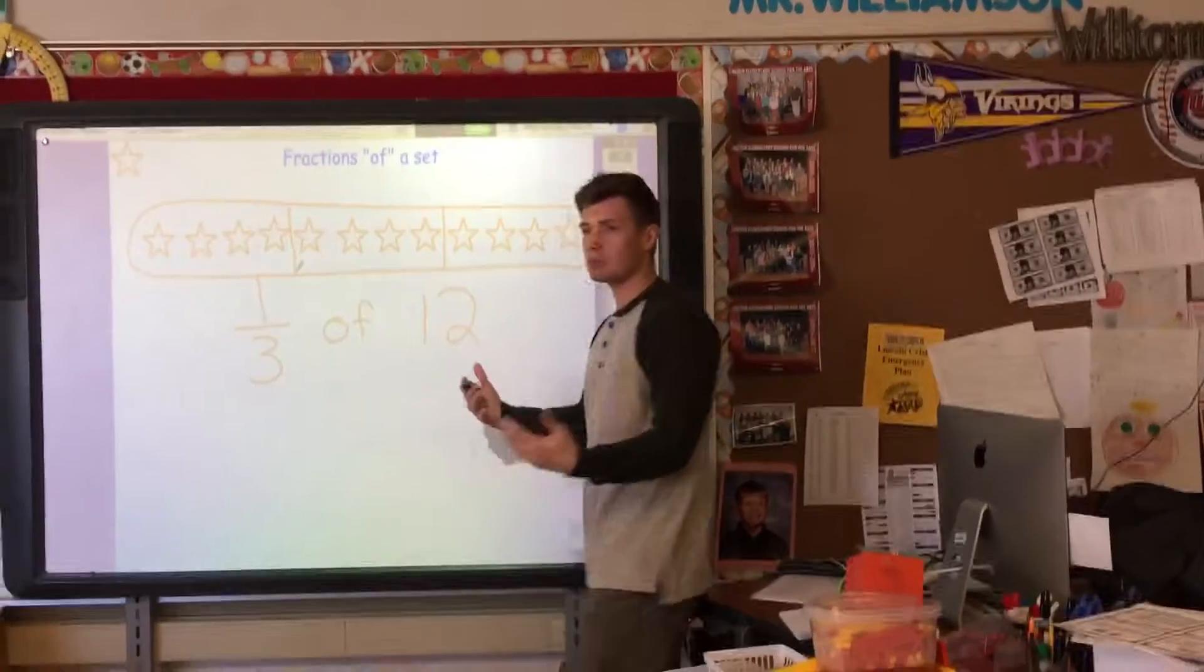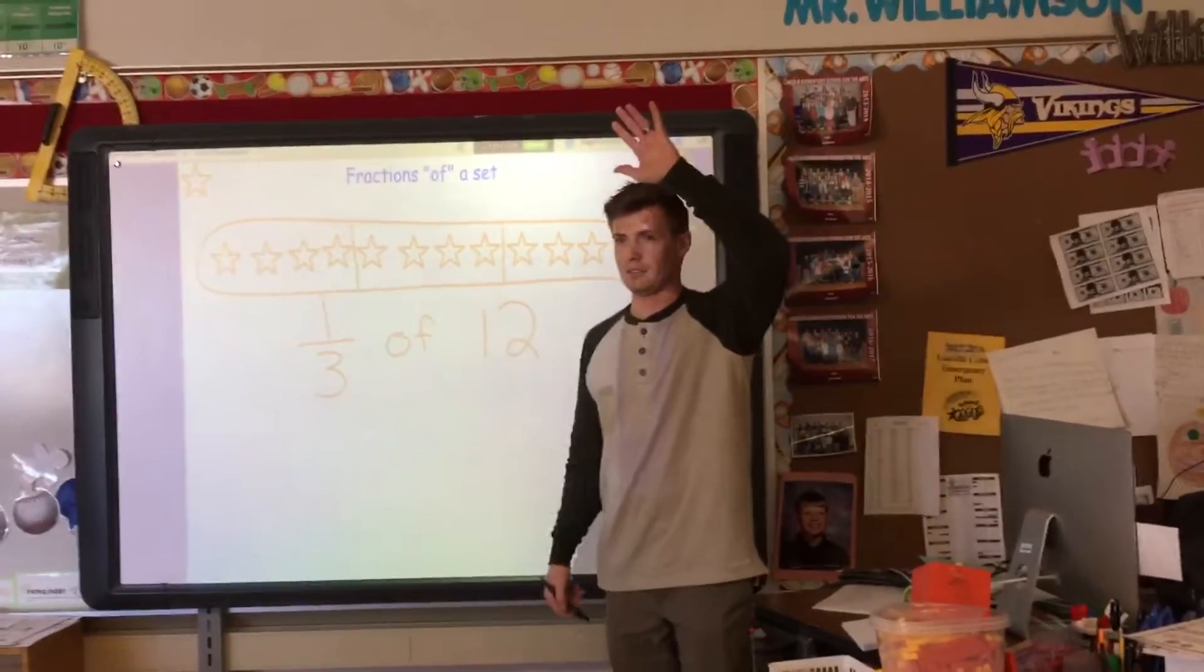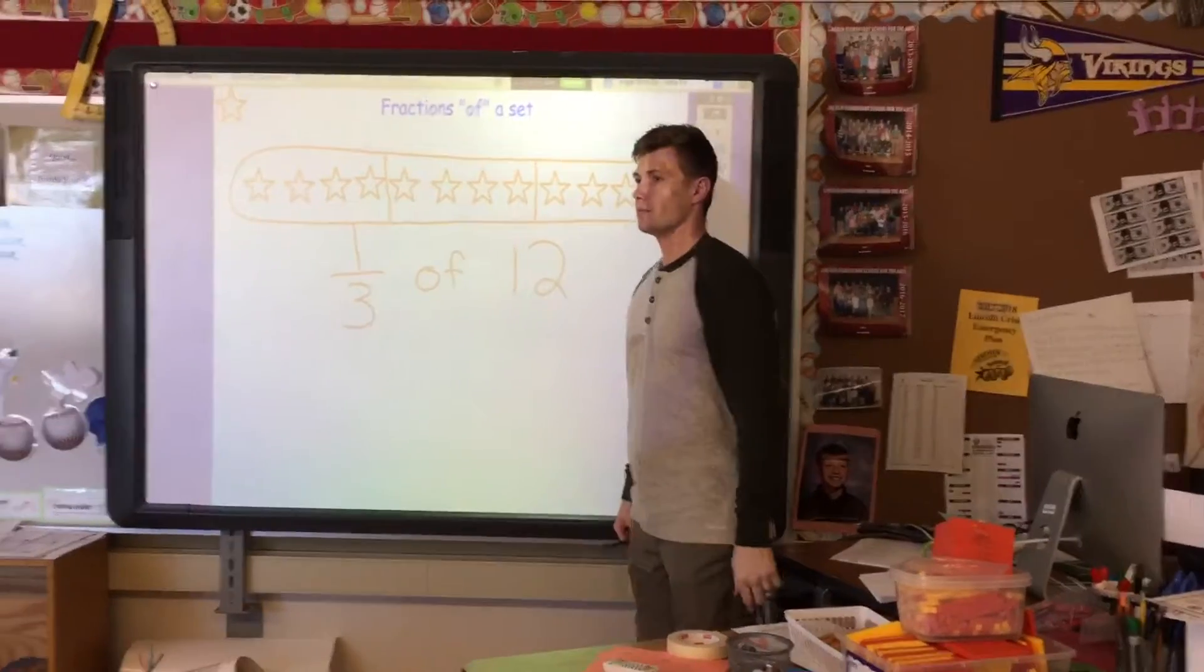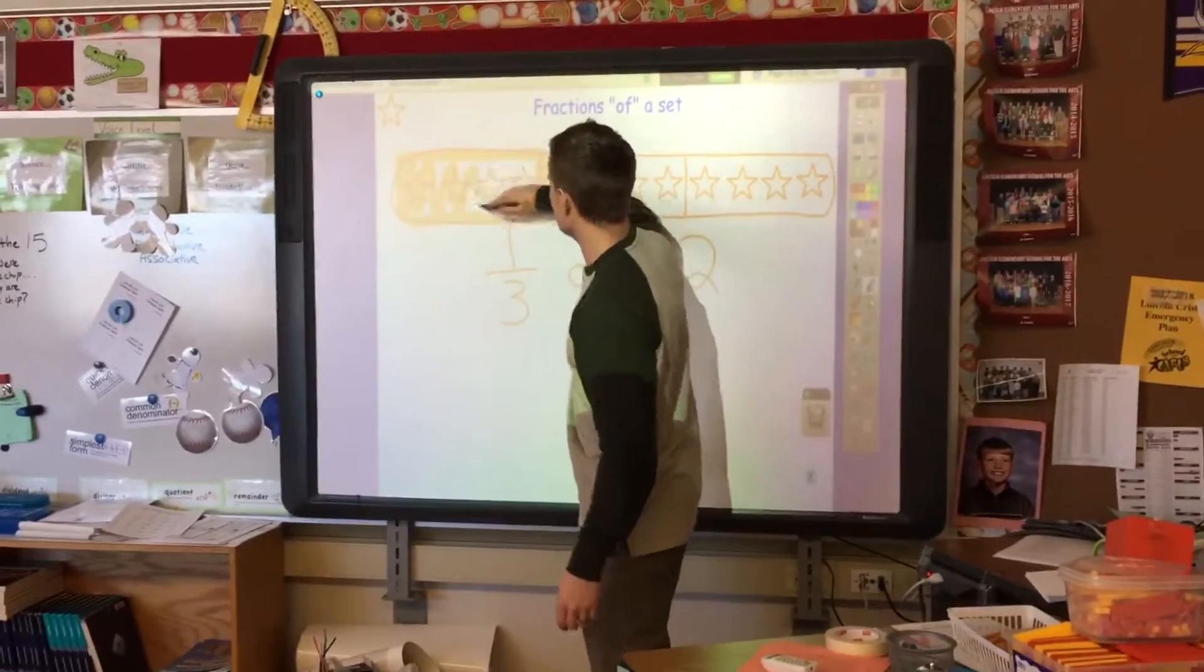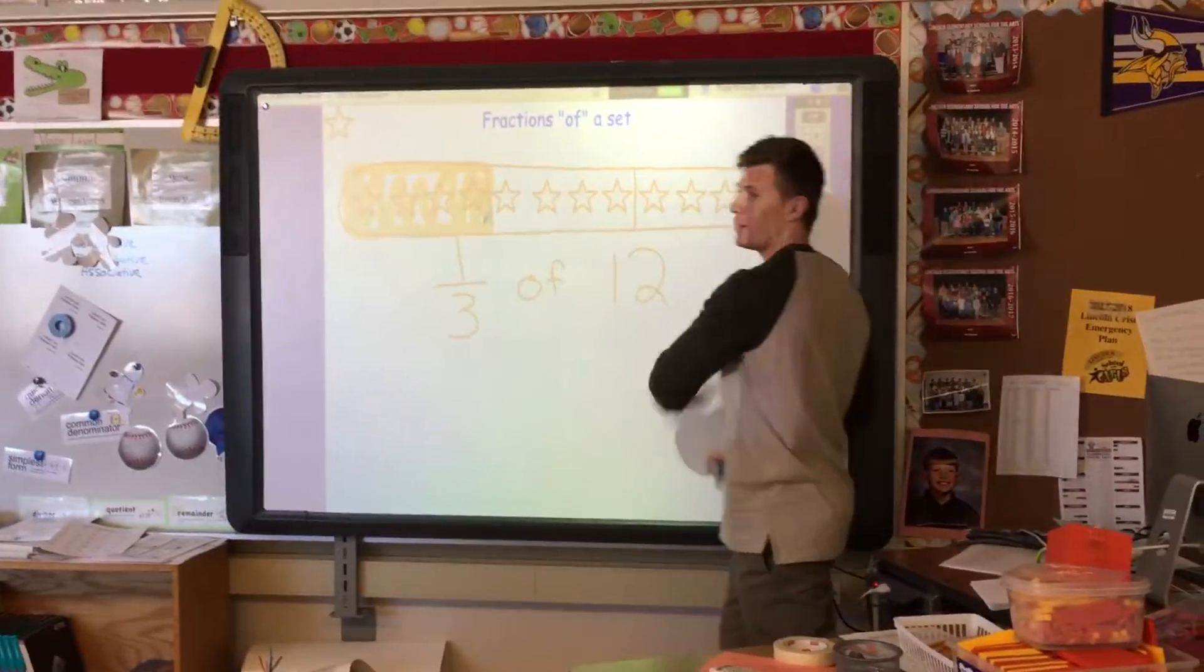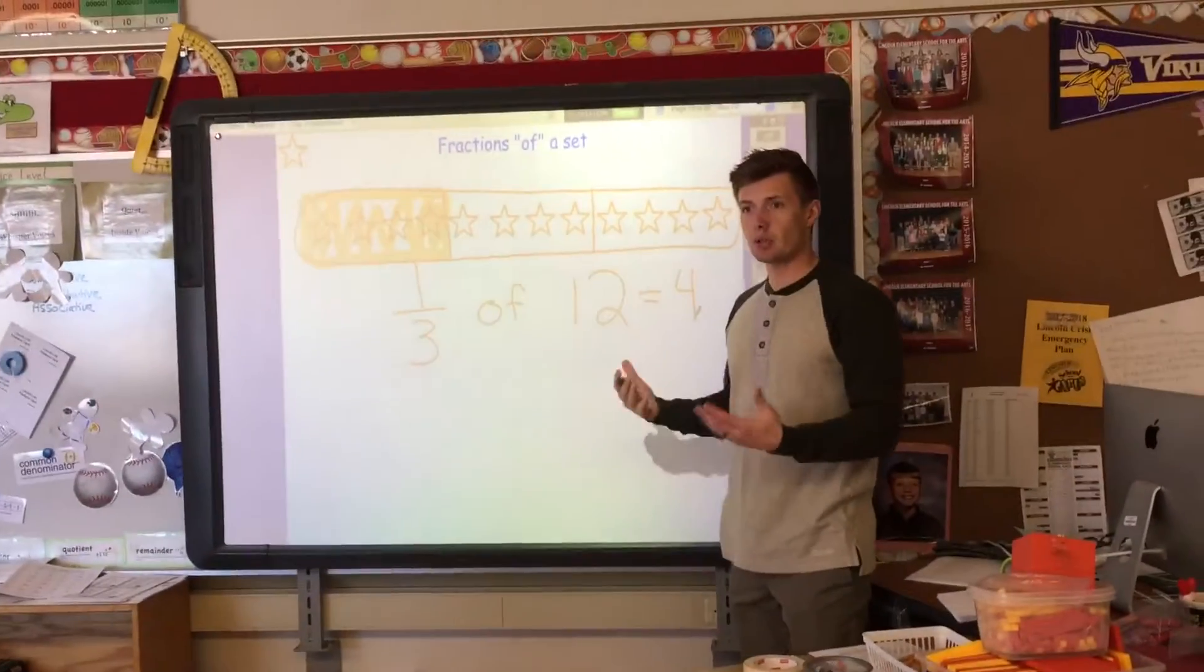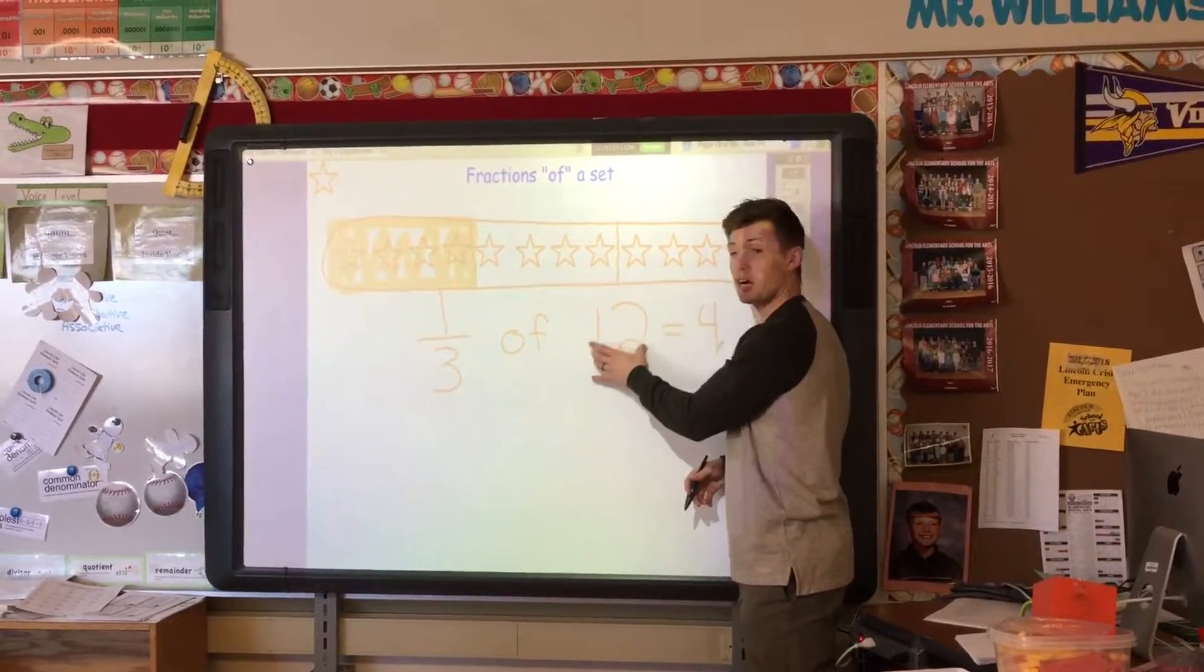So if I was going to highlight one-third, how many stars would that be? If I wanted to highlight one-third of my stars. Ava? I'm going to highlight these four. Understanding that this here is one-third of my set. Well, four is smaller than twelve. And that's okay.